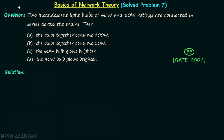In this lecture we are going to understand how to solve different types of questions based on the arrangement of bulbs. I have taken this question from the GATE 2001 electrical engineering exam. According to the question, there are two incandescent light bulbs of 40 watts and 60 watts ratings connected in series across the mains. Option A says they will consume 100 watts, option B says 50 watts, option C says the 60 watt bulb will glow brighter, and option D says the 40 watt bulb will glow brighter.